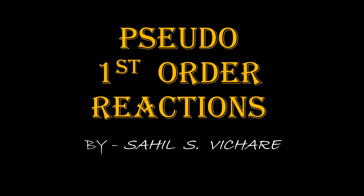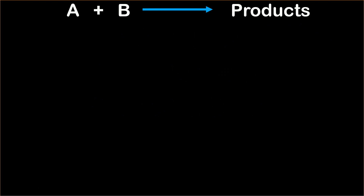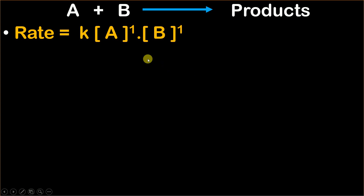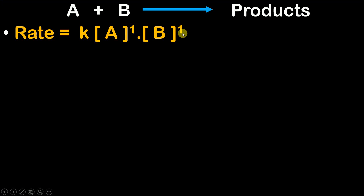Now to understand pseudo first order reactions, let us consider a simple reaction where A reacts with B to give us products. Now how to find out the rate of the reaction? With the help of the rate law, we get to know that the rate of the reaction is K into molar concentration of A raised to the power 1 into molar concentration of B raised to the power 1. Here K is the rate constant, and these powers 1 and 1 can only be found out experimentally.